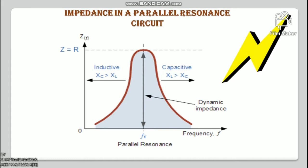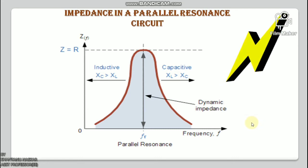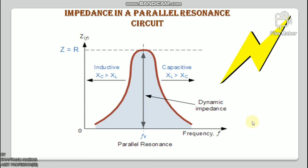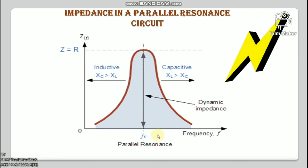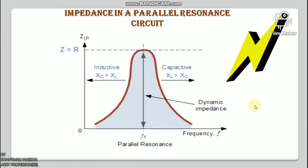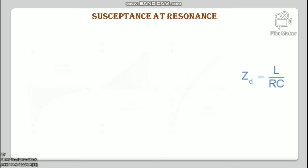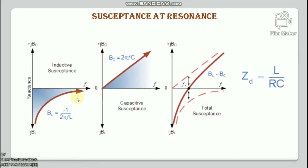Since the circuit current is constant for a given impedance Z, the total voltage across a parallel resonance circuit has the same shape as the total impedance. The voltage is generally taken from across the capacitor. At the resonant frequency fr, the admittance of the circuit is at its minimum and equals the conductance G = 1/R, because the imaginary part of the admittance — the susceptance B — is zero when BL = BC.